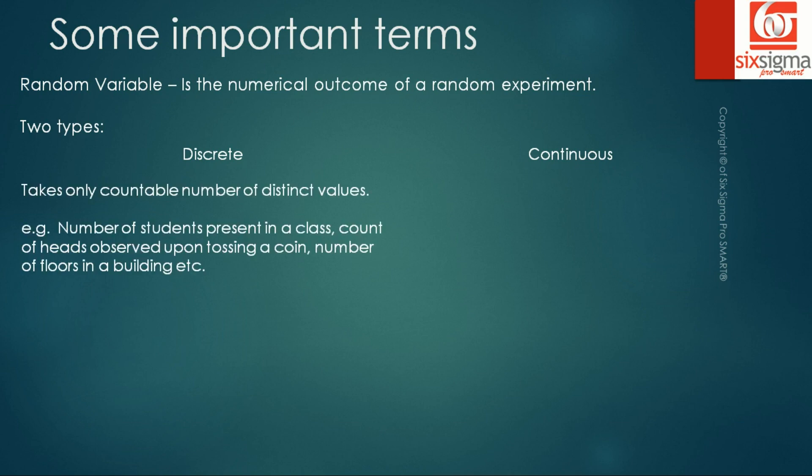Discrete random variables take only countable number of distinct values. For example, number of students present in a class, count of heads observed upon tossing a coin, number of floors in a building. As you can see, for each of these examples you'll have a specific value that you will return in response.